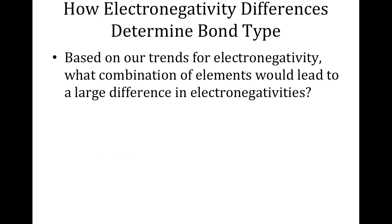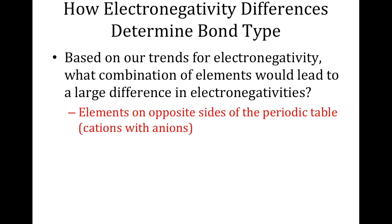Based on our electronegativity trends, elements on opposite sides of the periodic table lead to large differences in electronegativity. Cations are on the left side and anions are on the right side. Electronegativity increases from left to right, so elements on the right want electrons and become anions, while elements on the left lose electrons and become cations. The farther apart they are — ones on the far left bonding with ones on the far right — the larger the difference, and they form ionic bonds.